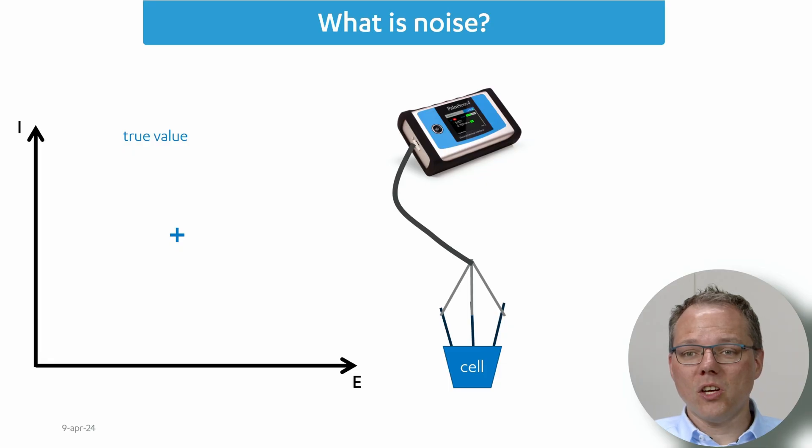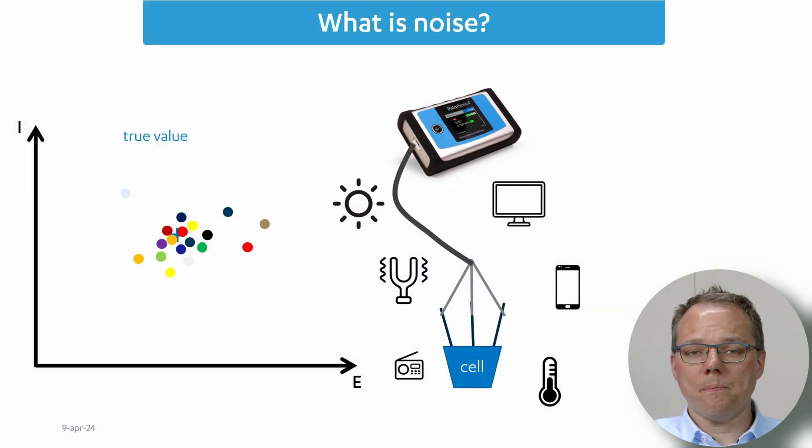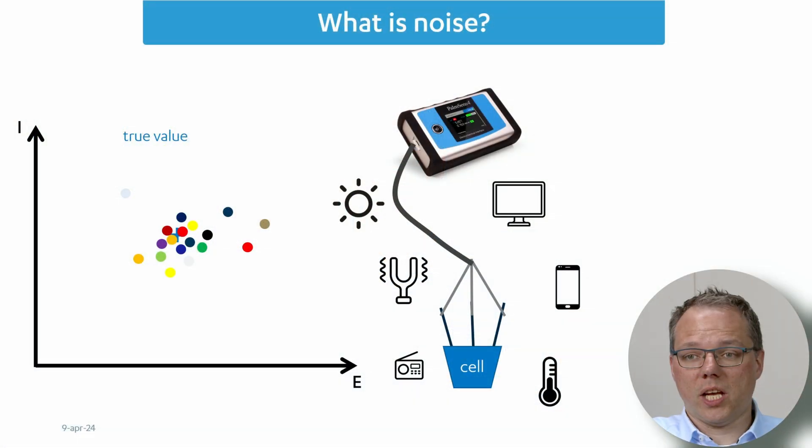Usually when you make your setup, you set up your potentiostat and your cell, you're expecting to measure one value which is the true value that your experiment should give. But actually we see that there are a lot of different influences on our measurement and they all lead to different results every time we do the measurement. If you repeat the measurement many times, these confetti-like points should have been the same value every time. Why is it different? Well because we do have all these influences around us that change our measurement.